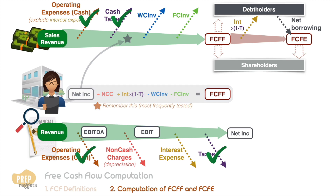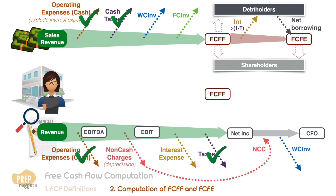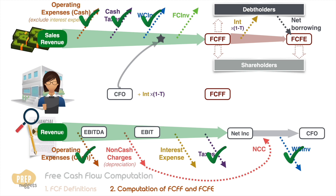Sometimes you may be asked to calculate free cash flow from CFO. Broadly, CFO is net income plus all non-cash charges minus working capital investments. CFO fits right in so that we can cancel out working capital investments. The only remaining adjustment needed is to add back interest expense adjusted for taxes. So FCFF from CFO is simply CFO plus interest expense times one minus the tax rate, minus fixed capital investments.